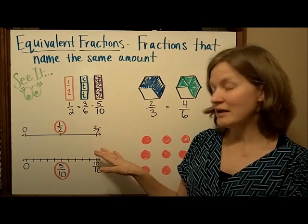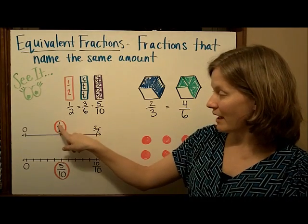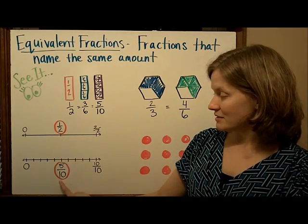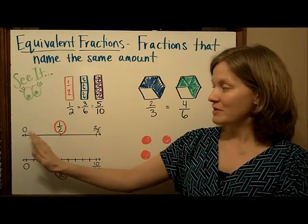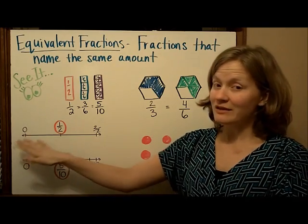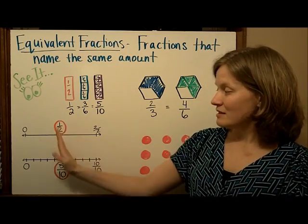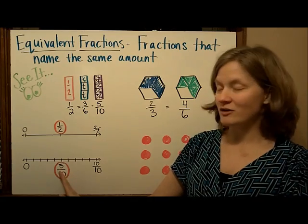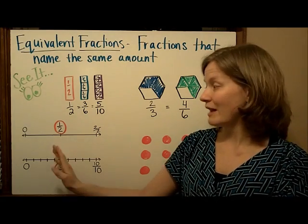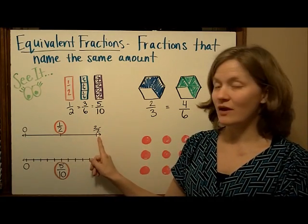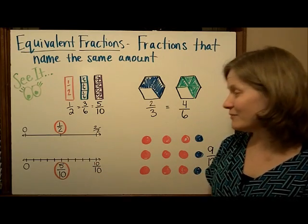On a number line, it's easy to see that one-half is equal to five-tenths. No matter how many — whether you divide the line into two pieces or into ten pieces — these fractions are still on the same point on the number line, halfway between zero and the one whole.